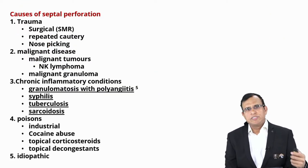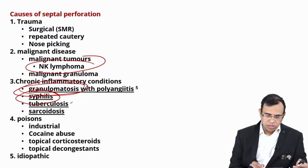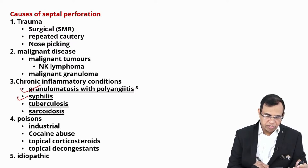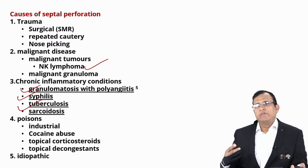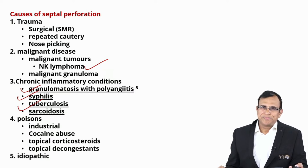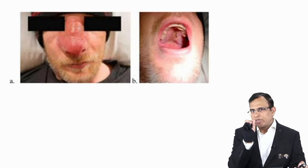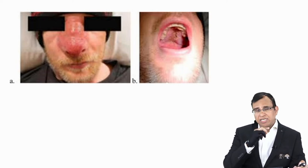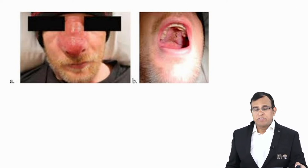The answer is NK/T-cell lymphoma — also called midline non-healing lymphoma, T-cell lymphoma. In this disease, 100% of patients will have perforation and deformity; the other conditions are less likely to cause both perforation and deformity commonly. In NK lymphoma the nose, midline, and palate get involved — the whole area gets necrosed. These are the causes of septal perforation: NK lymphoma, granulomatous diseases (Wegener's granuloma), syphilis, and tuberculosis.